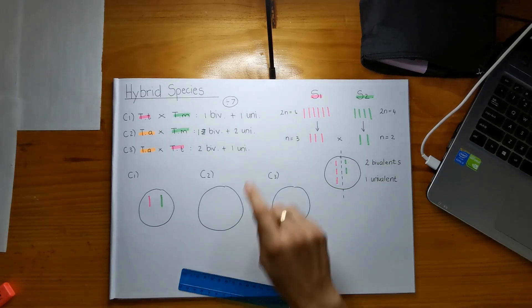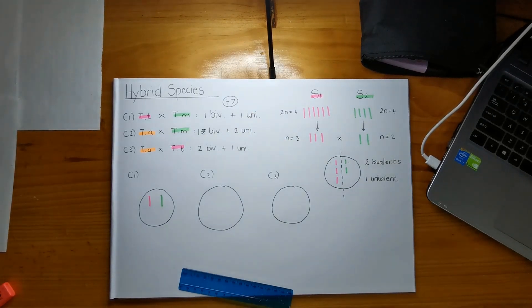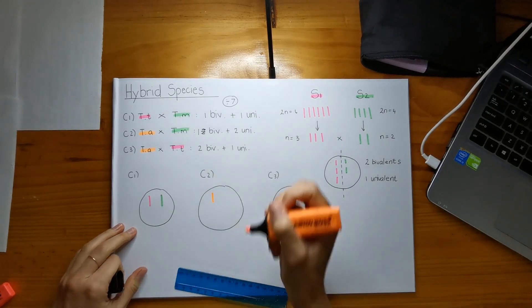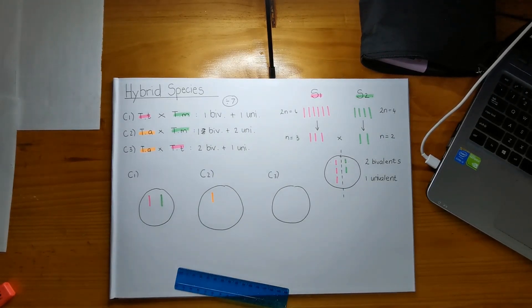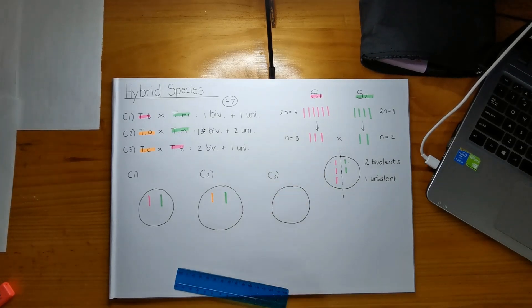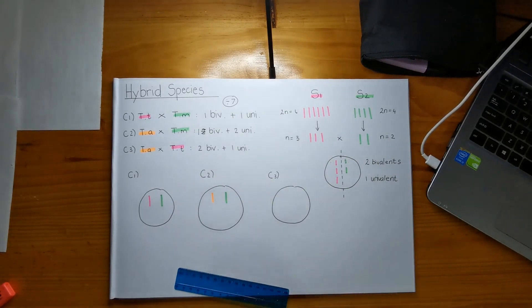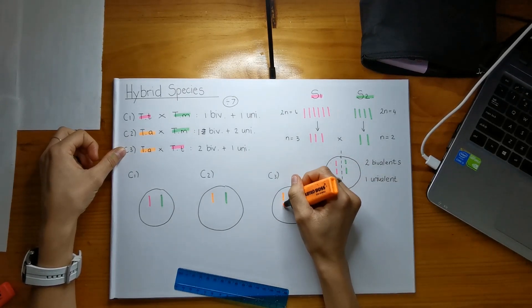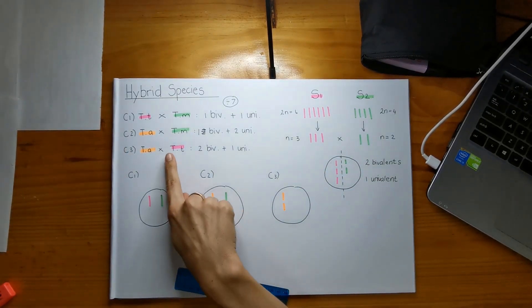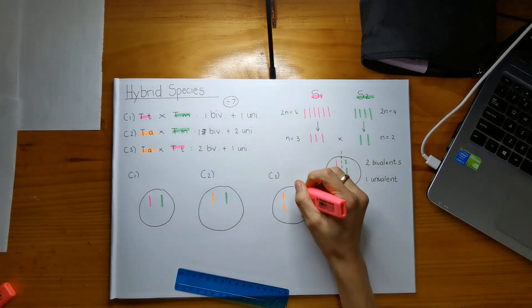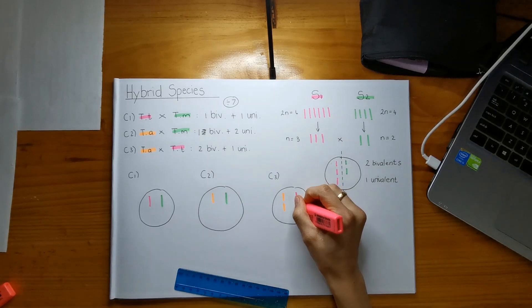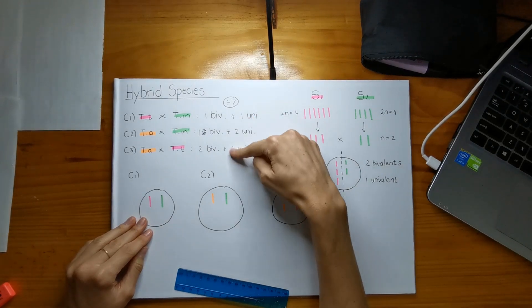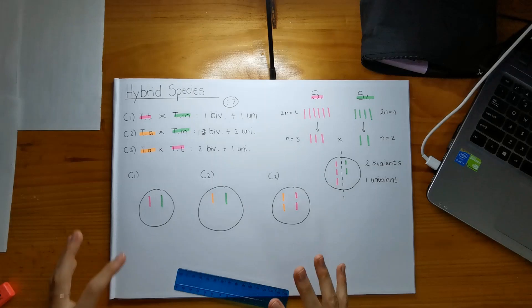Right. So I can't really determine where this univalent comes from yet. But let's do the same for this next one. So for TA, we know that one comes from TA and then we know that one comes from TM. But we can't determine what's going on with our univalent yet either. And then in the last one, we have two bivalents. And then from that species TT also shares a chromosome in that bivalent. So that's all my bivalents set. But now we just have to determine which species do these univalents come from?